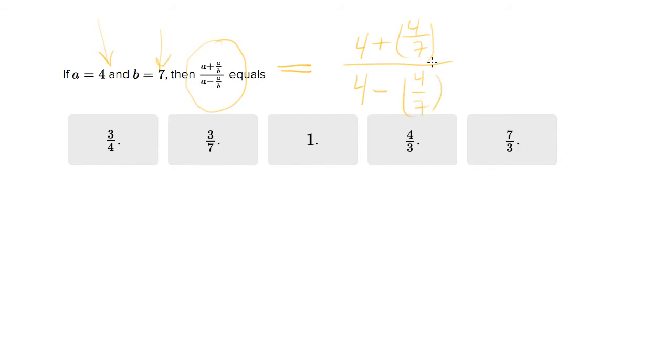And so if I plug the numerator in to my calculator, for example, I get 4.53, the denominator 3.42. These are approximate. Then if you actually divide those two numbers, what you'll get is 1.32.